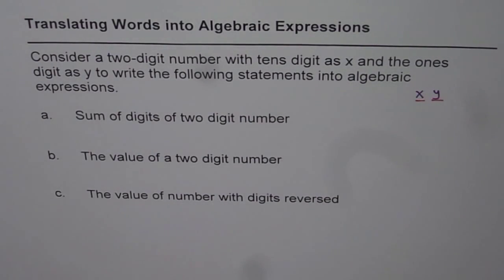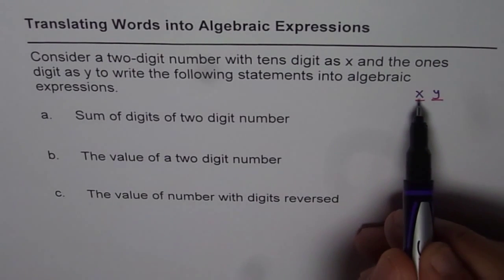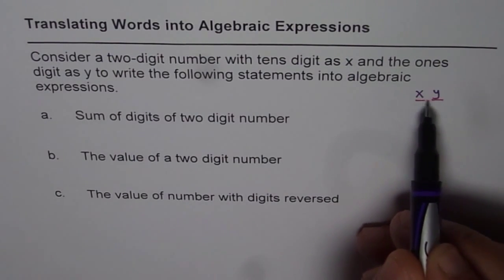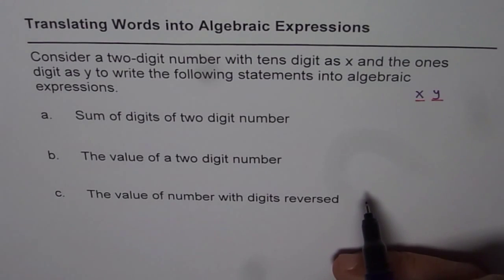For example, if the number is 47, then 4 is in the tens position and 7 is in ones position.